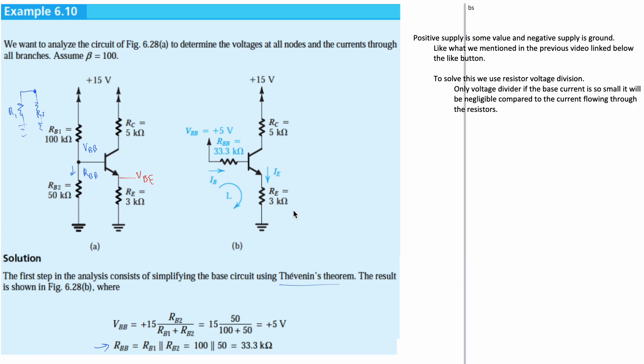To solve this, we're going to use resistor voltage division, which is the entire left side right here. The only voltage divider, if the base current is so small, it'll be negligible when compared to the current flowing through the resistors. We're going to have a greater current flowing through here than a current flowing through here. So the voltage here is going to be greater than the voltage through here because it has to go through this resistor first.